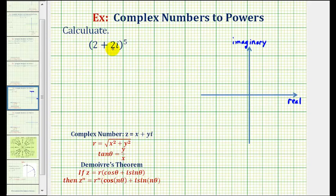We want to raise the complex number 2+2i to the fifth power. To do this, we're going to write the complex number in polar form and then apply De Moivre's Theorem. We could write the complex number in exponential form and then raise it to the fifth power, but for this example, we'll use De Moivre's Theorem.